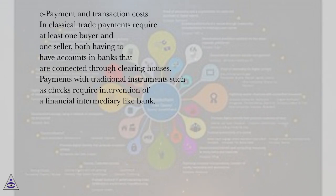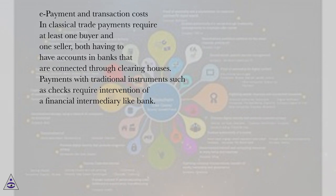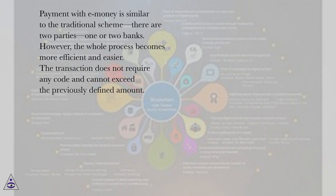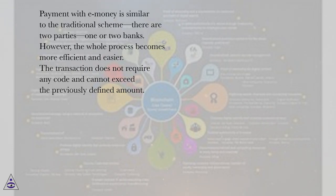E-payment and transaction costs. In classical trade, payments require at least one buyer and one seller, both having to have accounts in banks that are connected through clearing houses. Payments with traditional instruments such as checks require intervention of a financial intermediary like a bank. Payment with e-money is similar to the traditional scheme — there are two parties, one or two banks — however, the whole process becomes more efficient and easier. The transaction does not require any code and cannot exceed the previously defined amount.